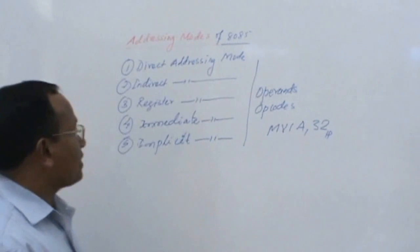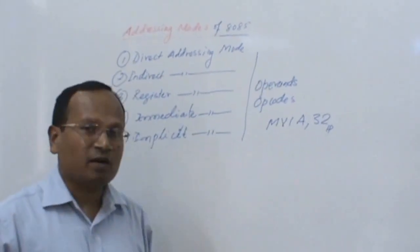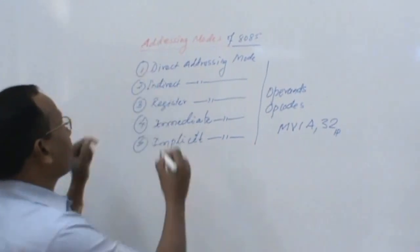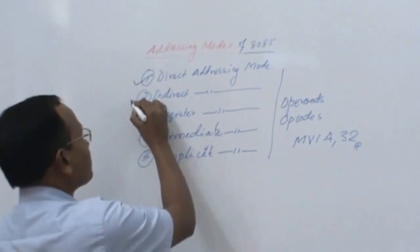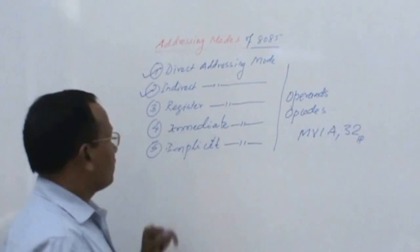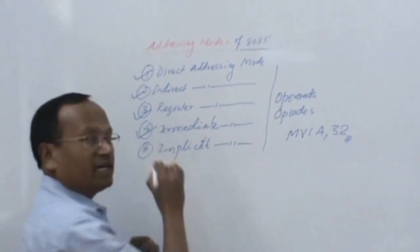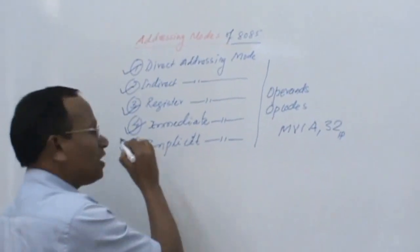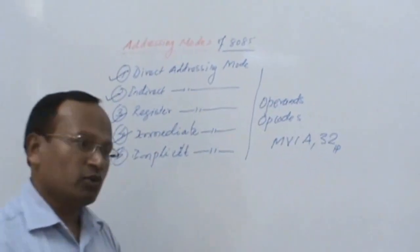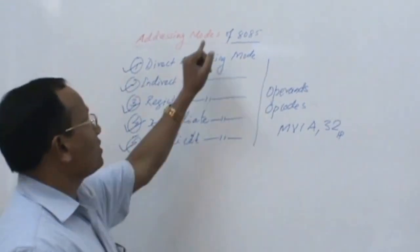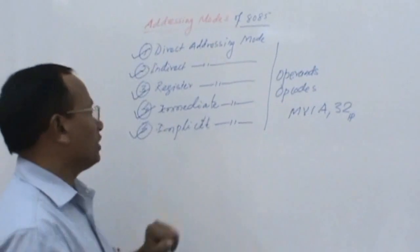Addressing modes are divided into different categories. The major categories are: number 1, direct addressing mode; number 2, indirect addressing mode; then register addressing mode; immediate addressing mode; and implicit addressing mode. These are the main types of addressing modes of the 8085 microprocessor. Let us start one by one.